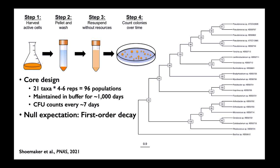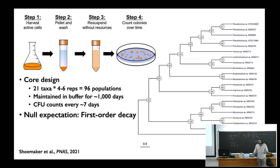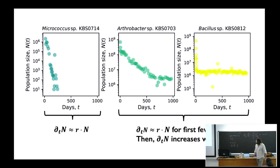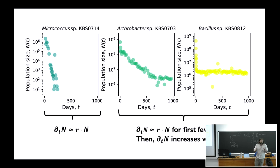Our null expectation was that we'd get first-order decay rates, get some estimation on the death rate, look at metabolic activity of cells, and say something about dormancy. But what happened was that we only had one taxon that went extinct and showed consistent linear decay.